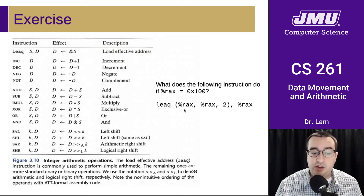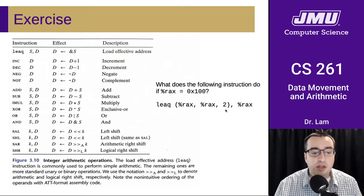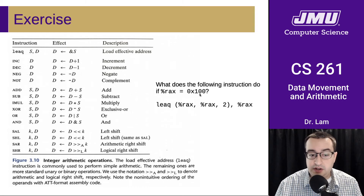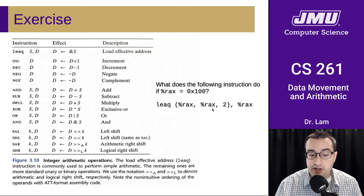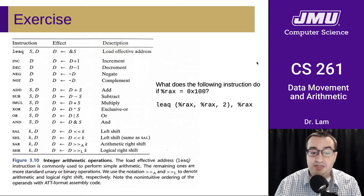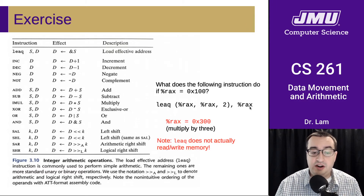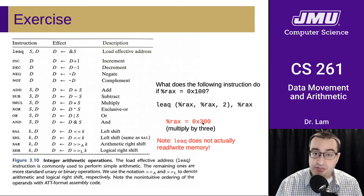Remember, the effective address calculation for this addressing mode is the value of the base register plus the value of the index register times the scale. So if the value of rax is hex 100, we get 100 plus 2 times 100, which is 200, giving us hex 300. That value is stored in rax — we don't access memory at this location, we just take this computed address value and store it into rax.